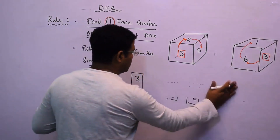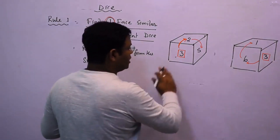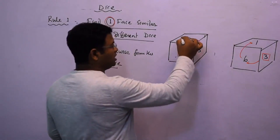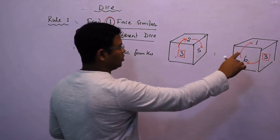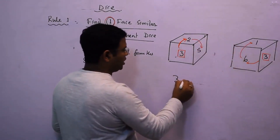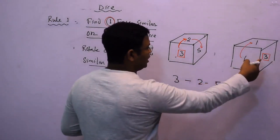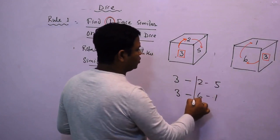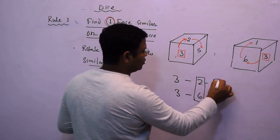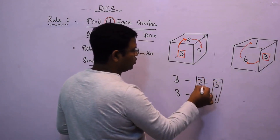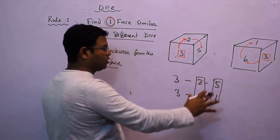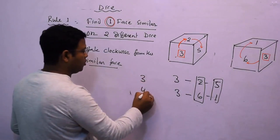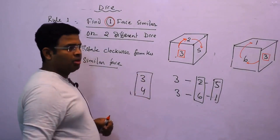To recap: take the similar face on two different dice — here 3 is similar — take clockwise rotation: 3, 2, 5 from the first dice and 3, 6, 1 from the second. So 2 opposite 6, 5 opposite 1, and since 4 is not seen among all these numbers, 3 is opposite 4.